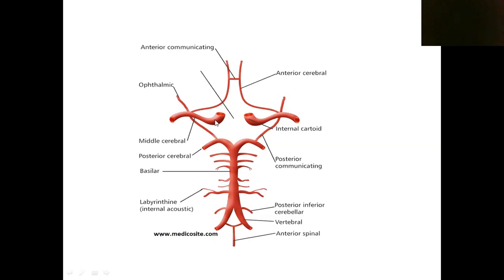At the same time, in the anterior part of the cranial cavity, we can see two internal carotid arteries — right and left. The internal carotid artery mainly gives two major arteries: one is the anterior cerebral artery and the other is the middle cerebral artery.